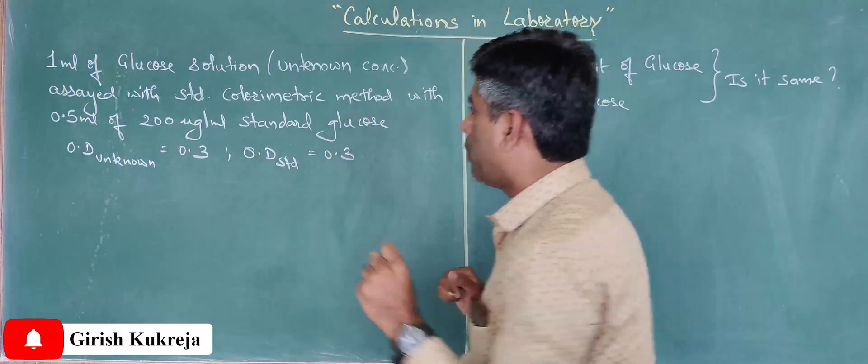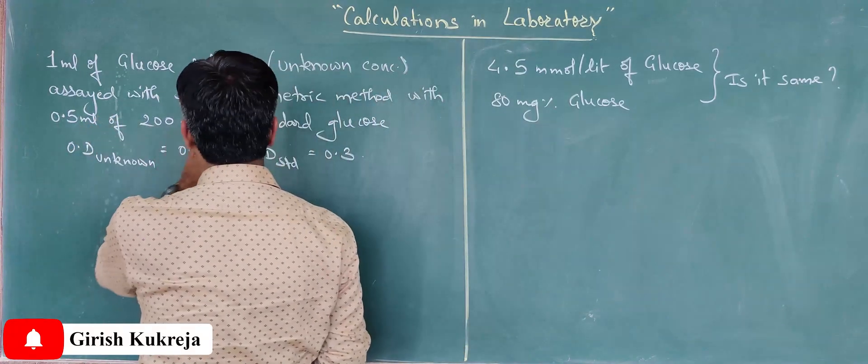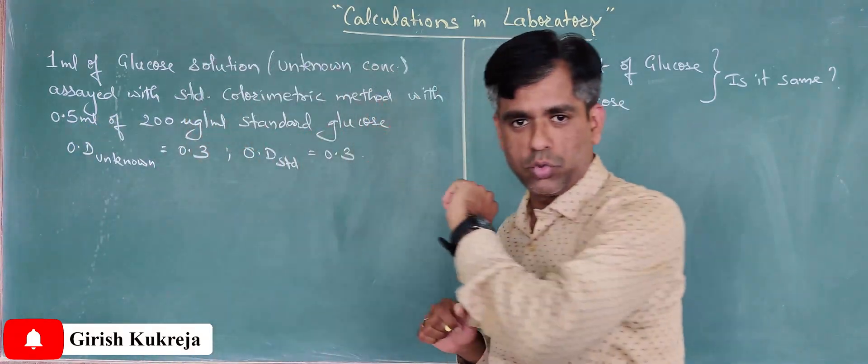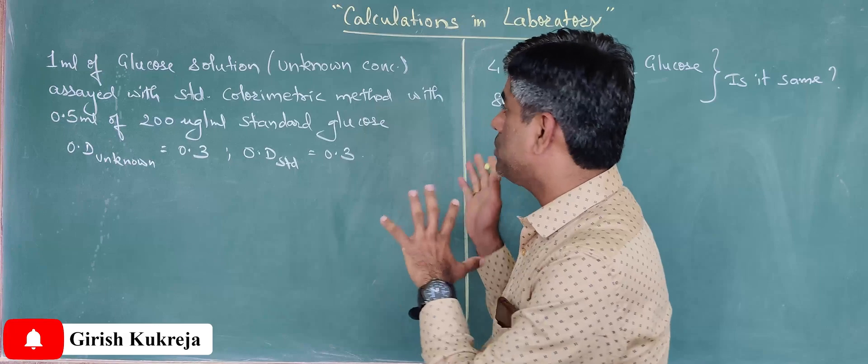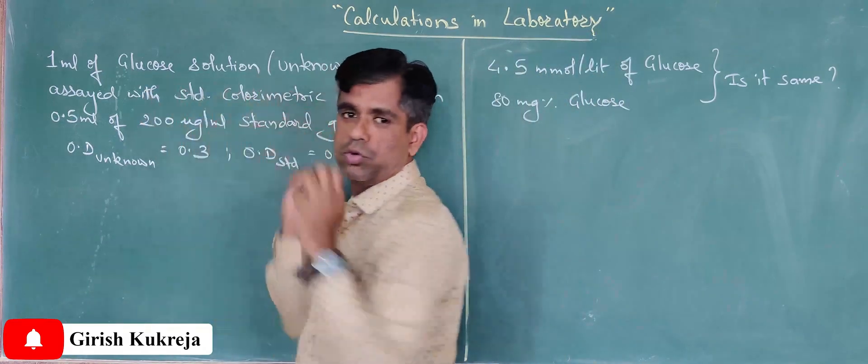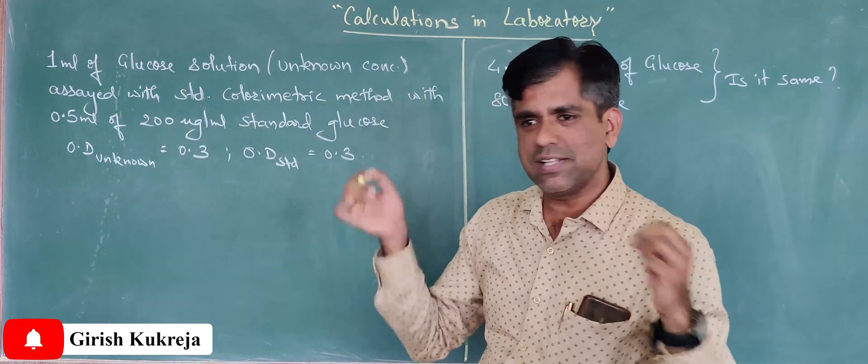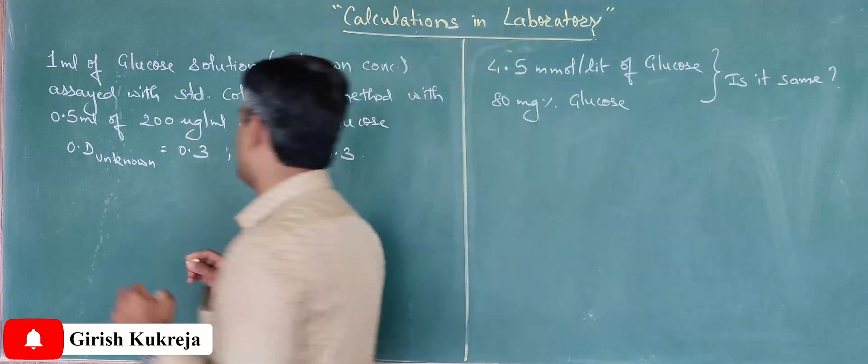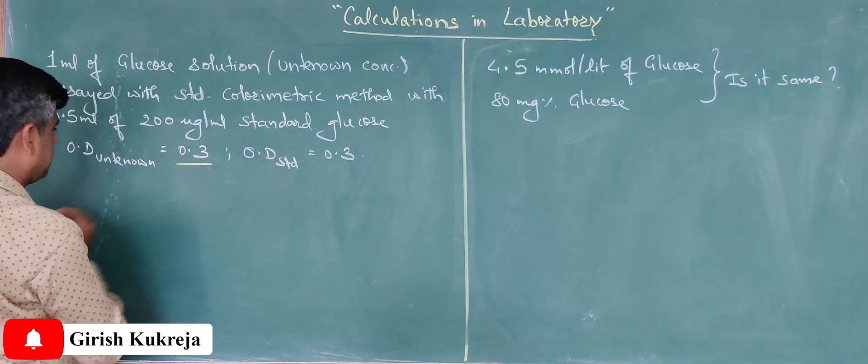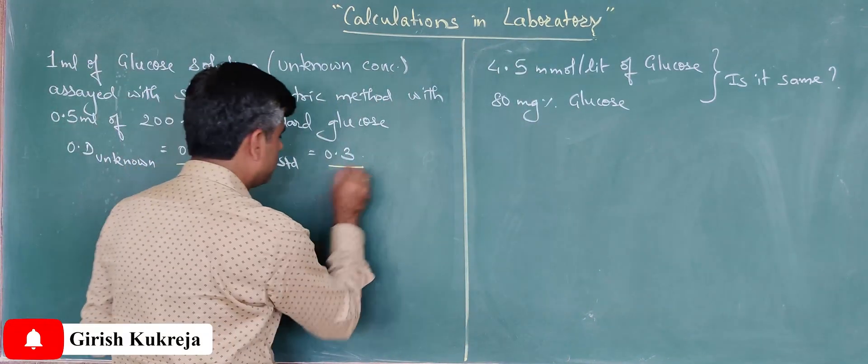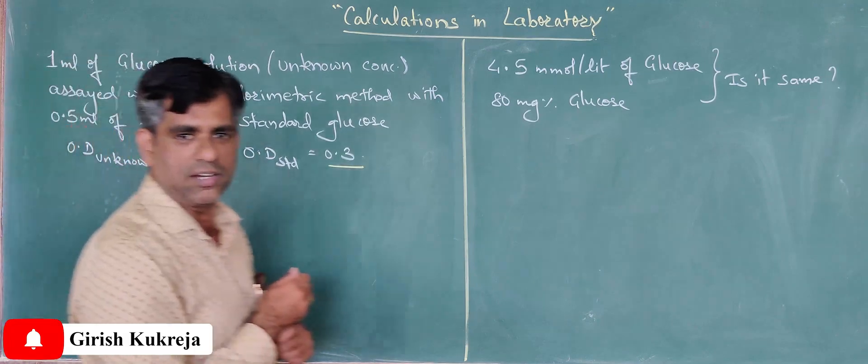I was using a standard glucose of 200 microgram per ml, but I took around 0.5 ml of that. So 0.5 ml of 200 microgram per ml was the standard glucose, and my unknown solution was 1 ml. Now when I did this with a standard colorimetric method, I got the OD for unknown as 0.3 and OD for standard also as 0.3.